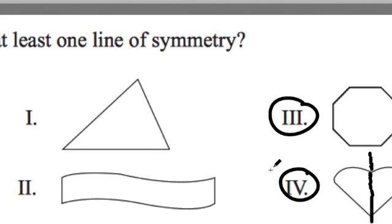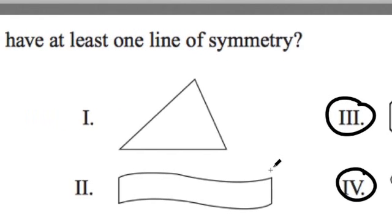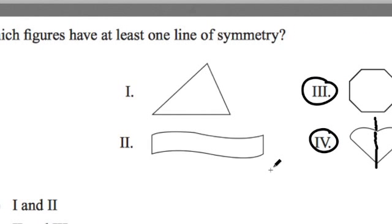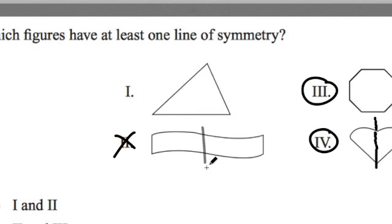What about these other shapes? I don't see anything saying this is to scale or not, but I would definitely rule out shape two, because it doesn't look like you could divide it in any way that when you fold it over it's going to fold perfectly. So that one's easy to rule out.